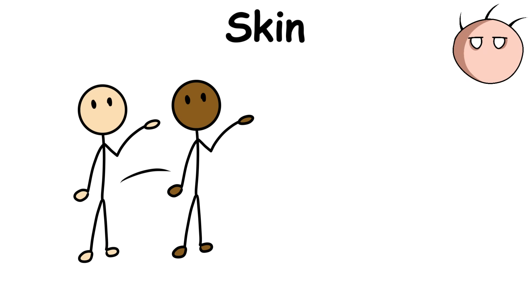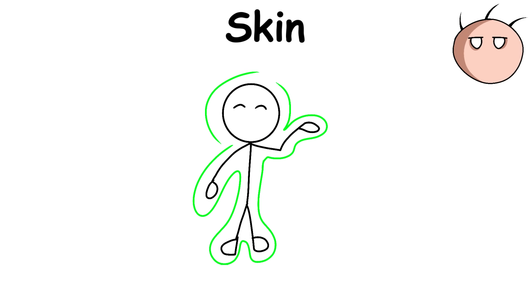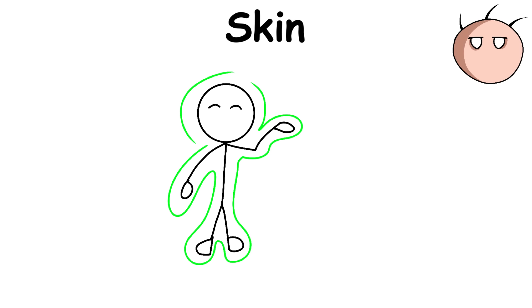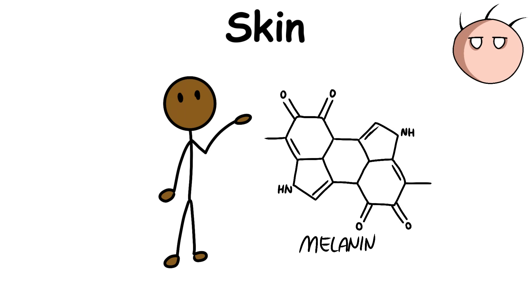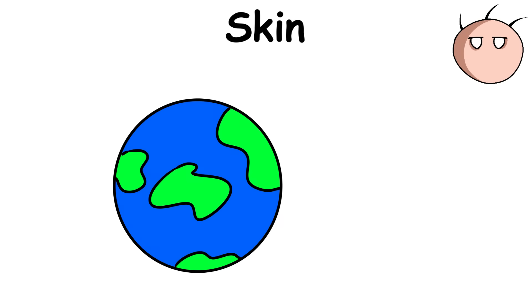People from different parts of the world have different skin colors because of melanin, a substance that the skin produces to help protect the body from the sun's harmful rays. Melanin also darkens the skin, so in parts of the world where the sun shines brighter, people have darker skin to protect their bodies from the sun.